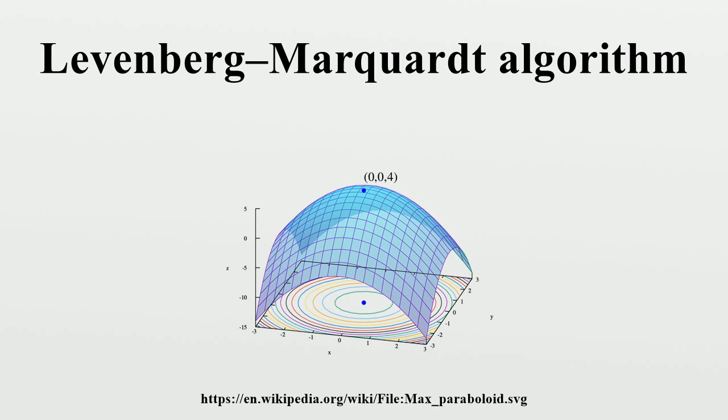the LMA finds only a local minimum, which is not necessarily the global minimum. The LMA interpolates between the Gauss-Newton algorithm and the method of gradient descent. The LMA is more robust than the GNA,